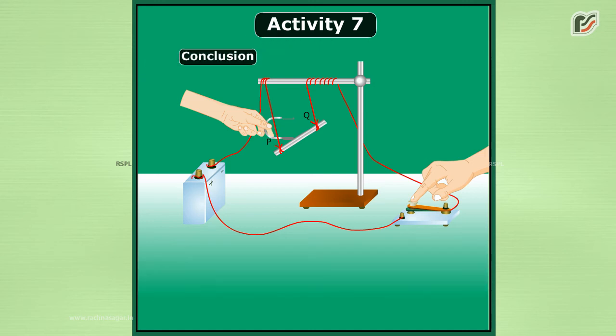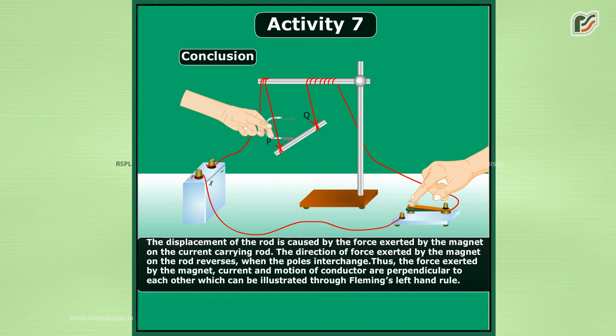Conclusion: The displacement of the rod is caused by the force exerted by the magnet on the current carrying rod. The direction of force exerted by the magnet on the rod reverses when the poles interchange. Thus, the force exerted by the magnet, current, and motion of conductor are perpendicular to each other, which can be illustrated through Fleming's left-hand rule.